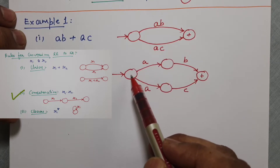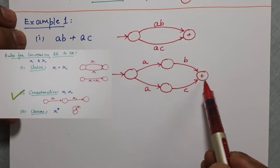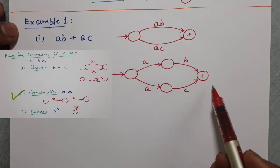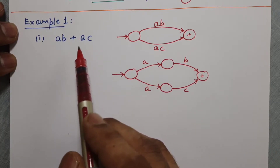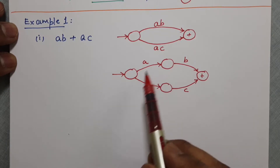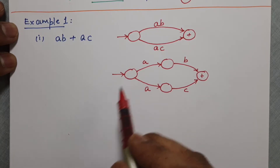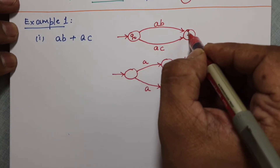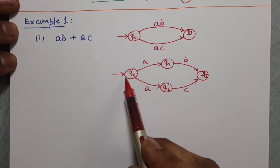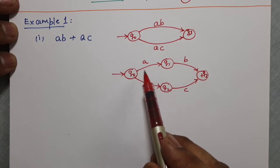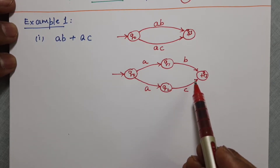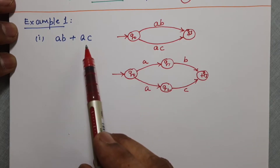R1 R2 can be written as R1 followed by R2 by applying rule number two. Now we have the final automata accepting the given regular expression. Let us name the states Q0, Q1, Q2, Q3. From Q0 on reading A, there are two transitions, so this is a non-deterministic finite automata. Can we have a deterministic finite automata for this language?